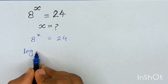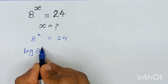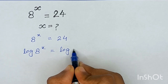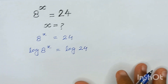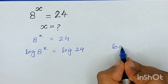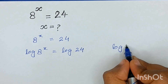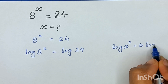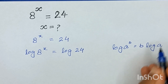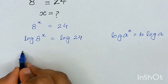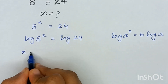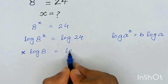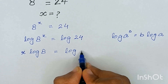So it will be log of a raised to the power x is equal to log of 24. As we know that log of a raised to the power b is equal to b times log of a, then it will become x times log of 8 is equal to log of 24.